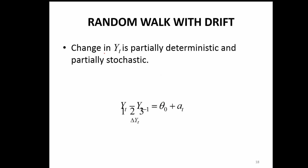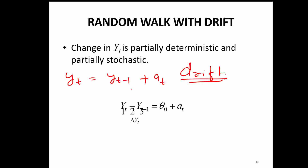Sometimes you could have a deterministic component added to the random walk — we call that a random walk with drift. You have a constant term added to it, so instead of just yt equal to y(t-1) plus the error term, you could also have a drift term theta-naught. This gives a deterministic term and a stochastic term — so it will be partially deterministic and partially stochastic.